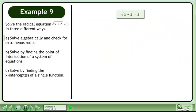Rewrite the equation. Square both sides of the equation to get rid of the radical. This gives us x plus 2 equals 9. Subtract 2 from each side of the equation to get x equals 7.